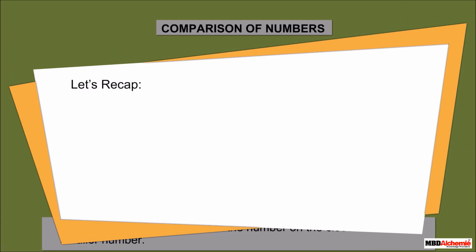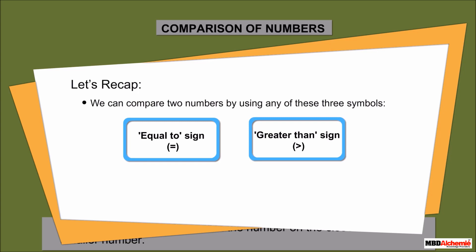Let's recap. We can compare two numbers by using any of these three symbols: equal to, greater than, or less than.